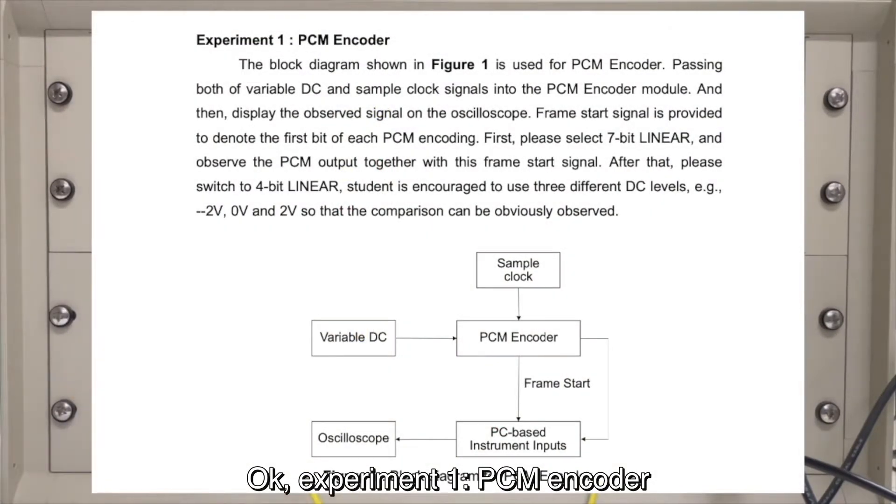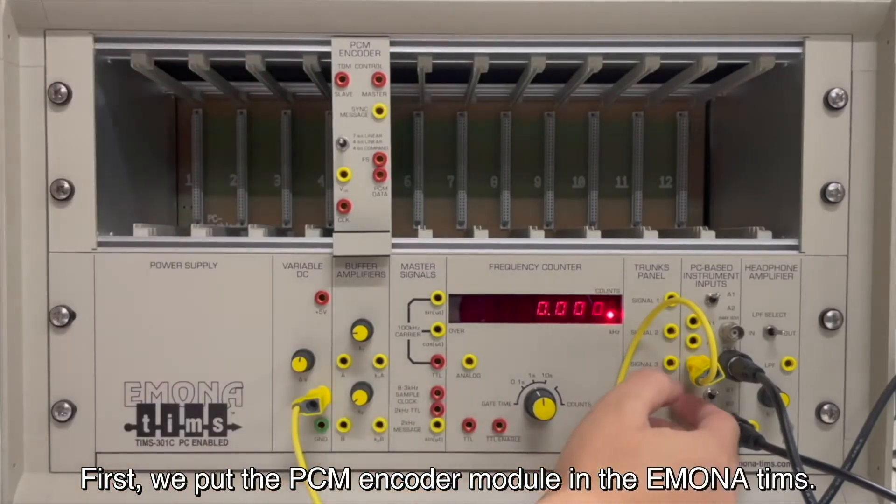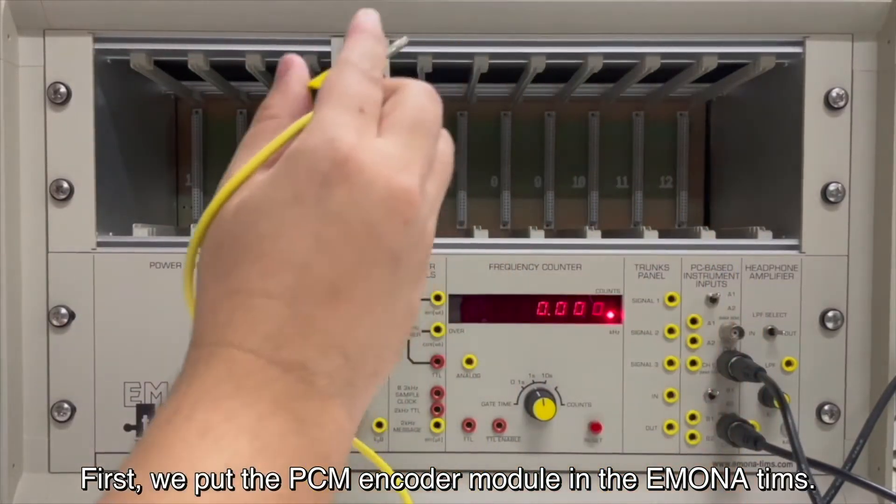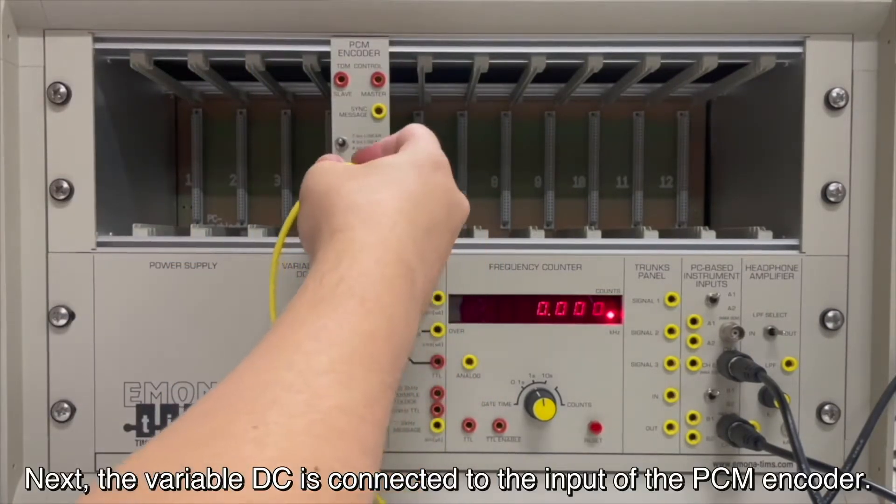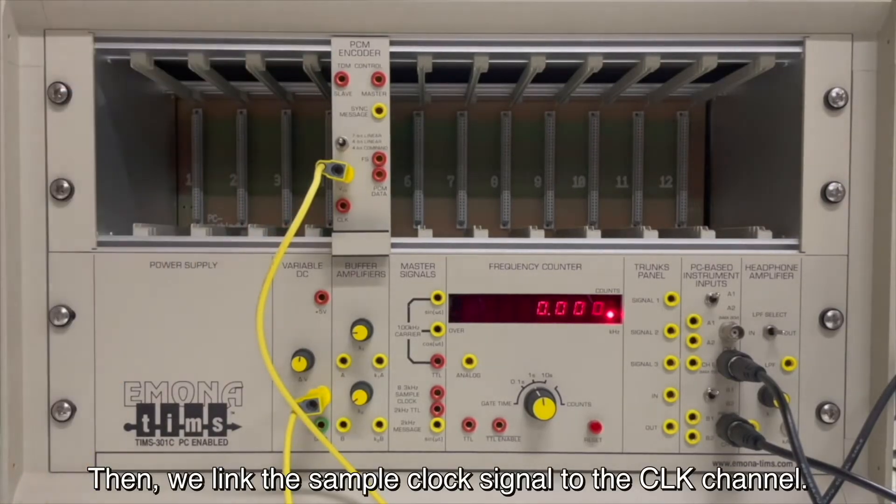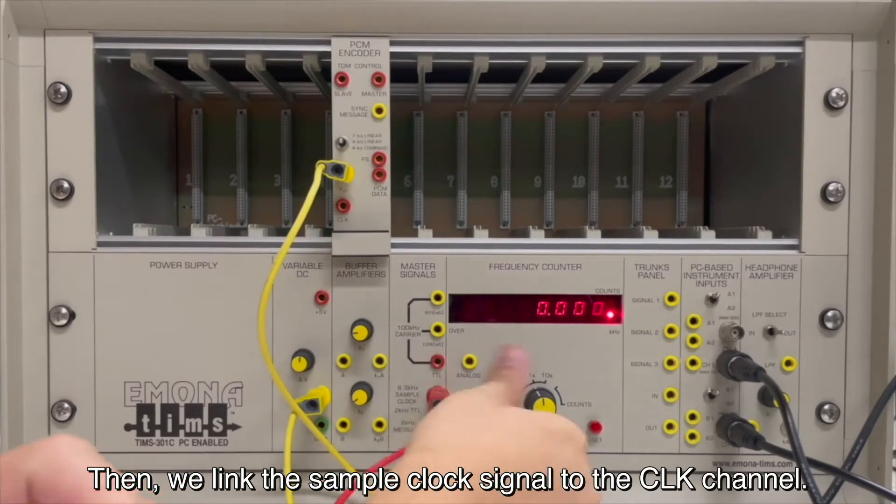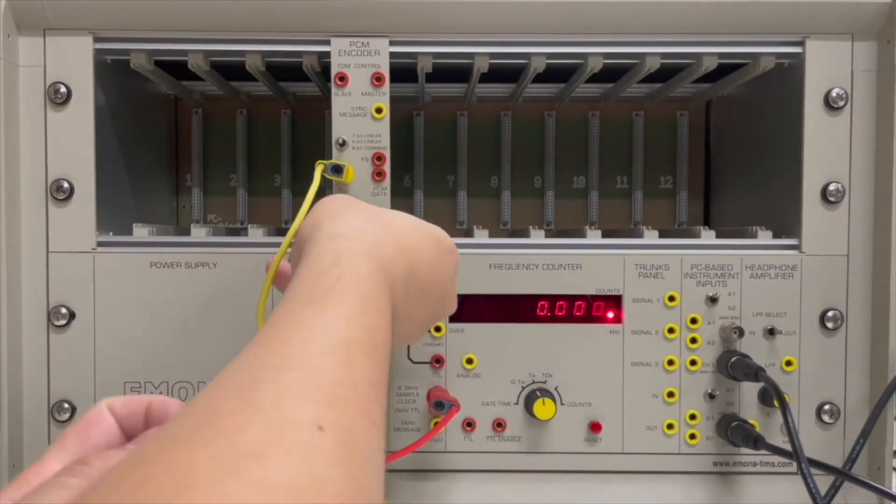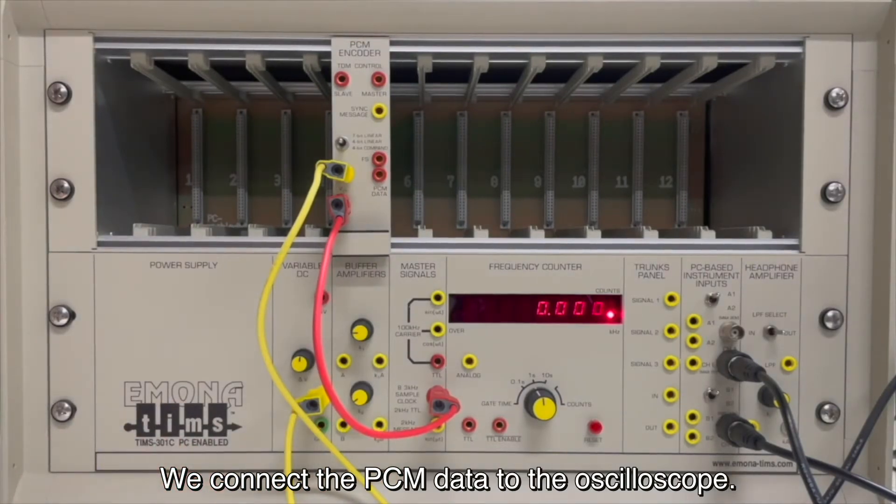PCM Encoder. First, we put the PCM Encoder module in the IMNA teams. Next, the variable DC is connected to the input of the PCM Encoder. Then, we link the sample clock signal to the CLK channel. We connect the PCM data to the oscilloscope.